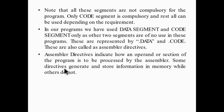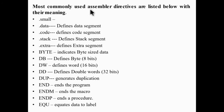Some directives generate and store information in memory while others do not. In our programs, we use only data segment and code segment. Most commonly used assembler directives: .model small — used to initialize the program with one code segment and one data segment.